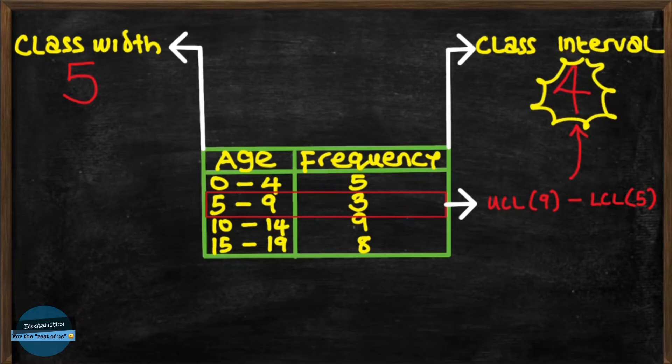But for the class width or class size or class length, it is the difference between the upper and lower boundaries, right? The lower boundary of this class is 4.5 while the upper class boundary is 9.5. So 9.5 minus 4.5 will give us 5. So the class width is 5.